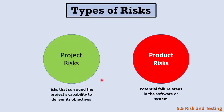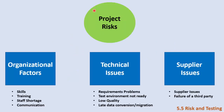Project risks are the risks that surround the project's capability to deliver its objectives. We may encounter various risks throughout the project. Product risks refer to areas within the software itself that may have failures. Project risks deal with things in the project itself, and we can divide them into three types: organizational factors, technical issues, and supplier issues.